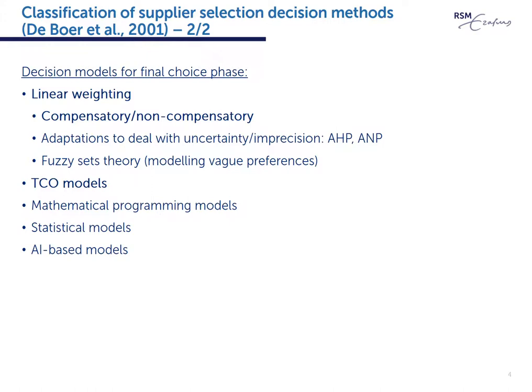There are three groups of models that are also not so common in practice, at least not yet. Mathematical programming can assist a buying firm to formulate a decision problem in terms of a mathematical objective function that needs to be maximized, for instance quality, or minimized, for instance cost. Statistical methods such as AHP and ANP models deal with stochastic uncertainty related to vendor choice. And, as in the qualification stage, AI models can also be used in the final choice phase. AI systems such as neural networks and expert systems are trained by experts and/or historical data. We refer to DeBoer et al. for further details.